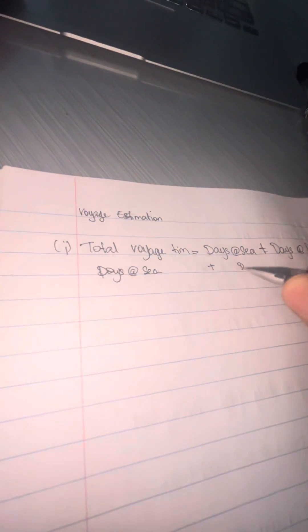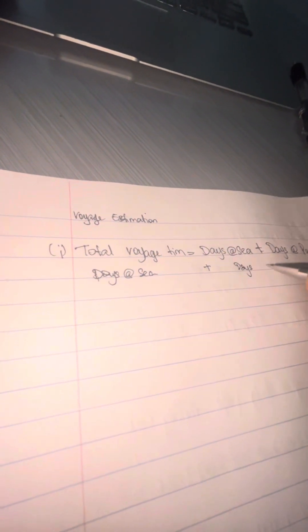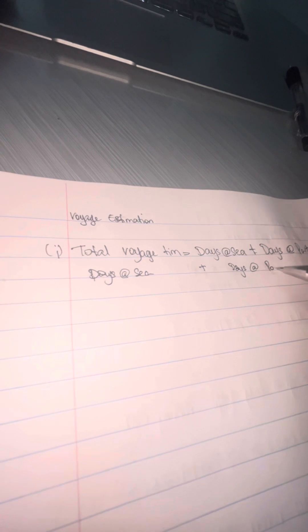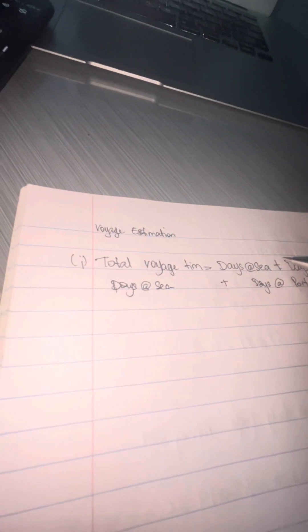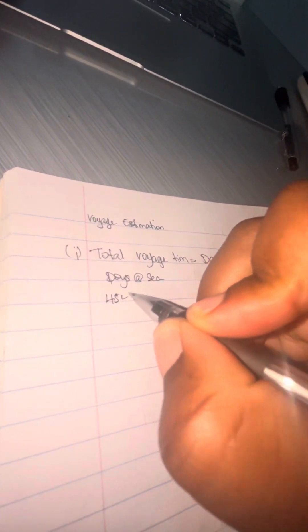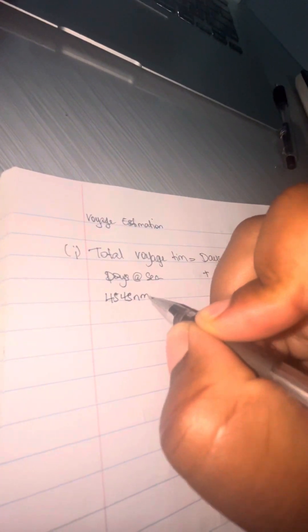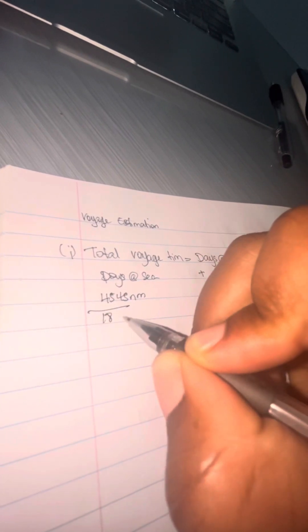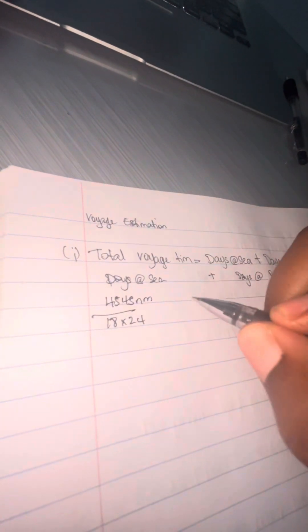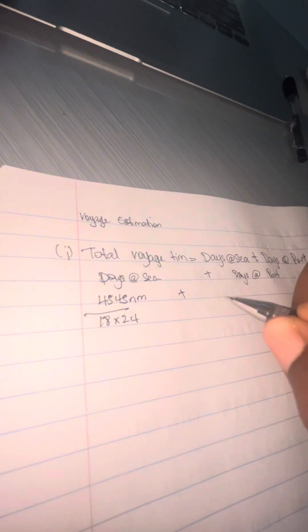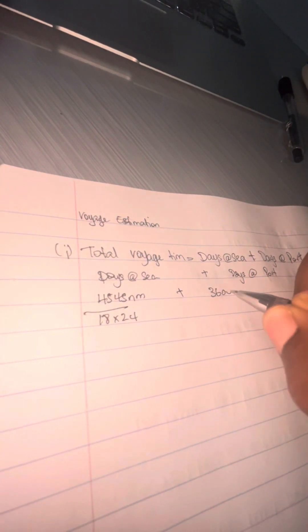We're going to divide that by 18 knots—knots is the speed at which the vessel is going. With the 18 knots, because we deal with a 24-hour day, just multiply that by 24 and you'll see how I punch it into the calculator now.